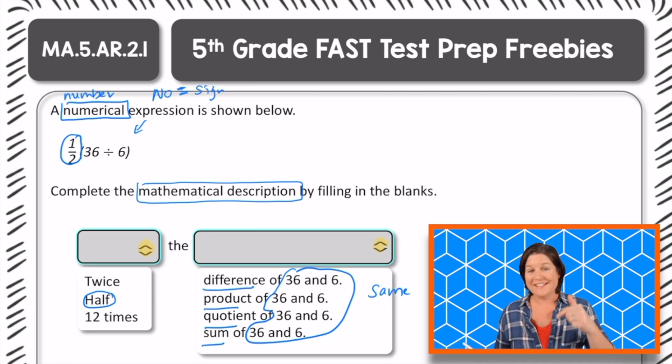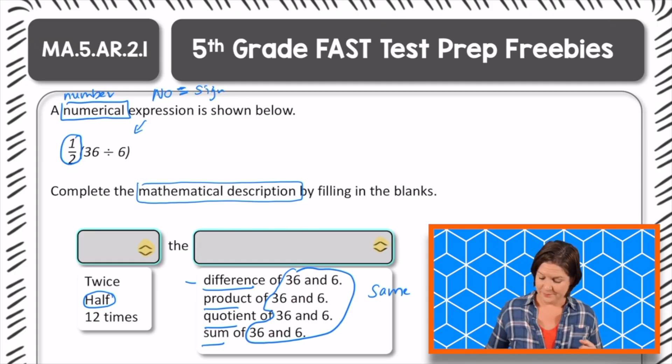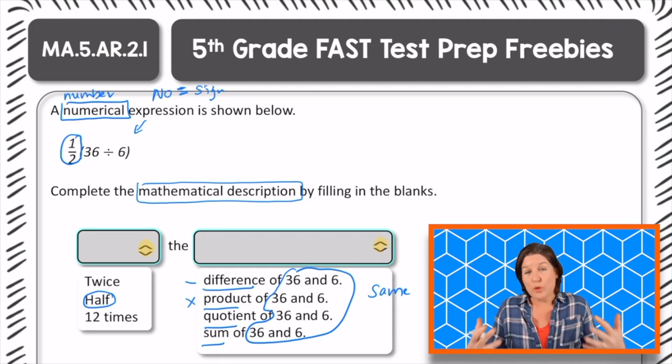So half the difference of 36 and 6, well, the difference would mean that we're doing which operation, subtracting, right. The product of 36 and 6, that would mean that we're doing which operation with 36 and 6, multiplying. The quotient of 36 and 6, when we are finding the quotient, which operation are we performing, division, yeah. And for sum, the sum of 36 and 6, which operation is that? Addition. Awesome.